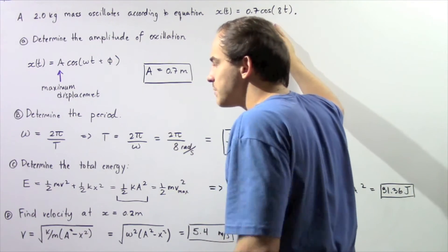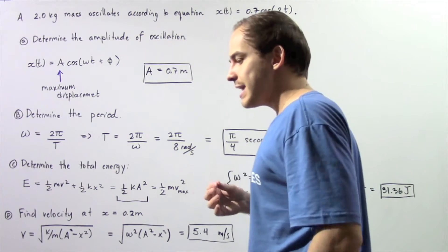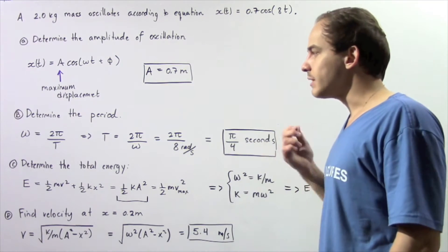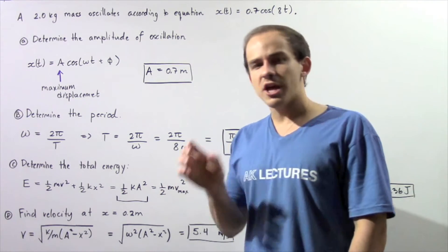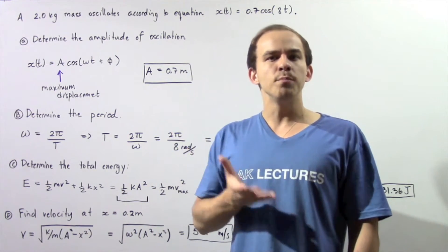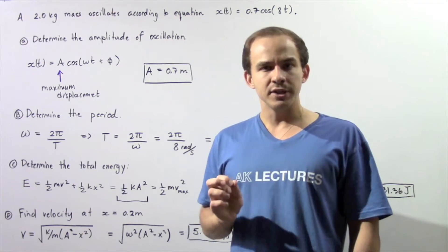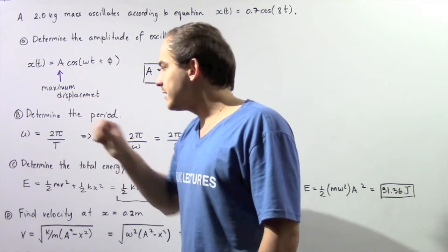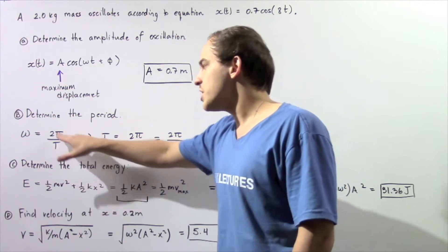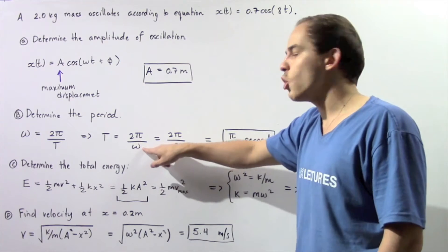Now let's move on to part B: determine the period of our oscillation — how long does it take our object to complete one full cycle. Recall the relationship between angular frequency and frequency: ω = 2π·f. And because frequency equals 1 divided by period, that means ω = 2π/T. Rearranging and solving for T, we get the period equals 2π divided by ω.